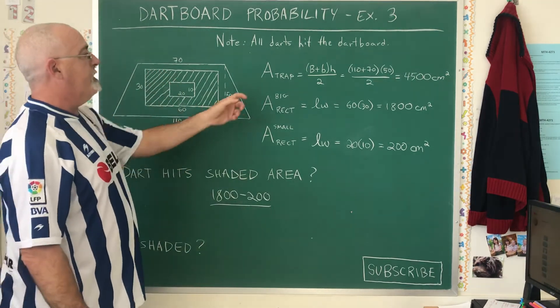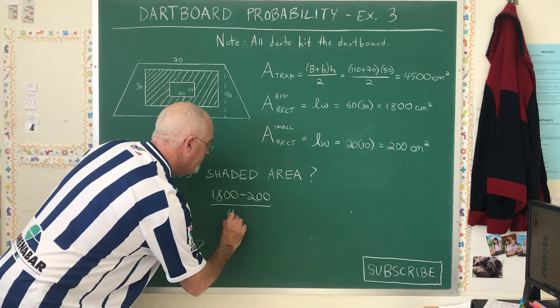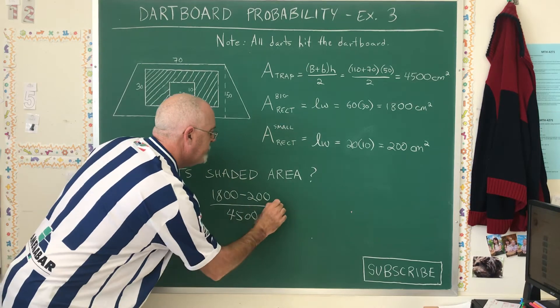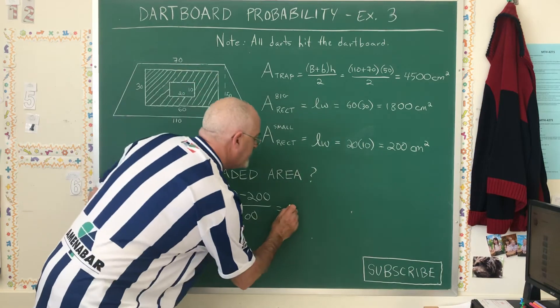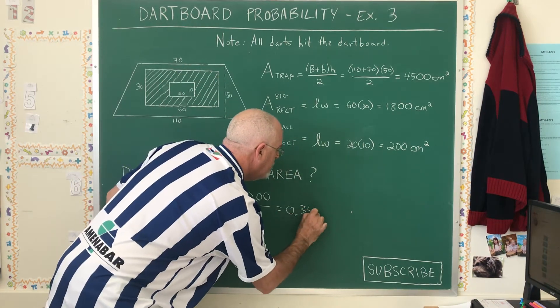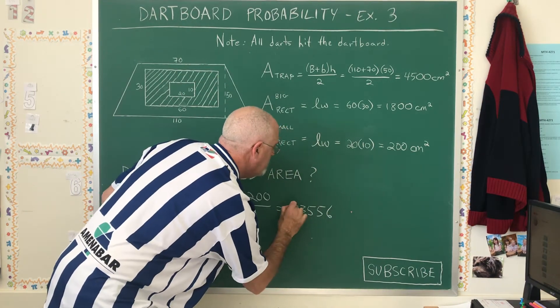Our total is the area of the trapezoid, which is 4500. When we divide and simplify, we get 0.3556 in decimal form.